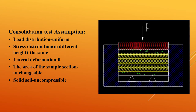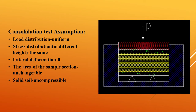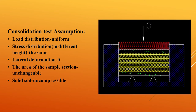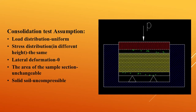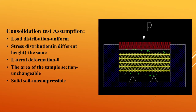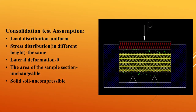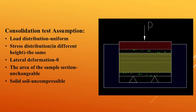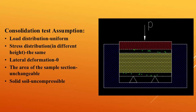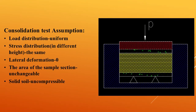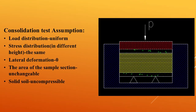Consolidation Test Assumptions: Load distribution is uniform, lateral deformation is zero, the area of the sample cross-section is unchangeable, and the solid soil particles are incompressible.